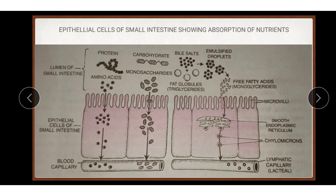First, we will see the absorption of carbohydrates. The epithelial cells of the small intestine show absorption of nutrients as seen in the slide. Carbohydrates are absorbed as monosaccharides in the duodenum and jejunum. Glucose and galactose are absorbed by the active pump of the cell membrane, which helps in active uptake. The most rapidly transported monosaccharide is galactose, with glucose second. The absorption of amino acids is by active transport, and some amino acids are absorbed by facilitated transport. It occurs mainly in the duodenum and jejunum. Normally 90 to 95 percent of amino acids are absorbed in the small intestine and enter the bloodstream.